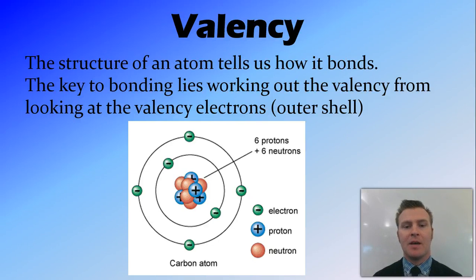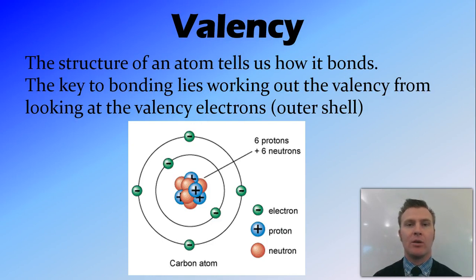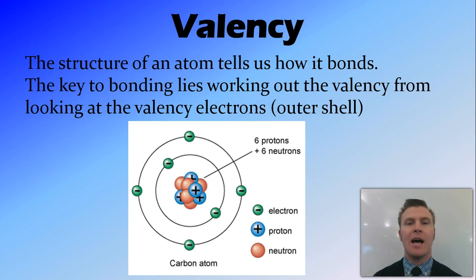Firstly, valency. The structure of an atom tells us how it's going to bond. In particular, what we want to look at is the electrons in the outer shell, and we call these the valence electrons. The example we looked at previously was carbon. Carbon has six electrons: two in the inner shell and four in its second shell. It has four valence electrons.